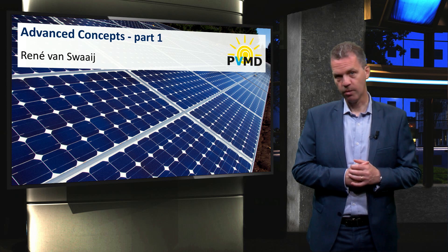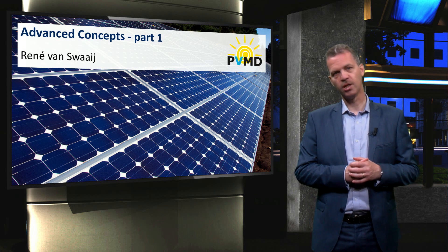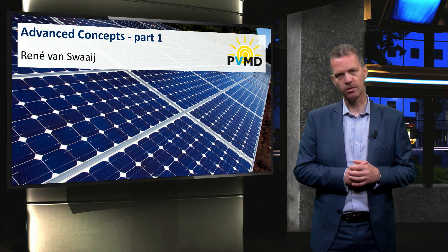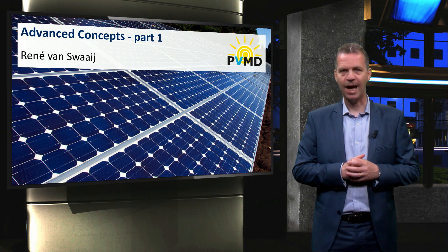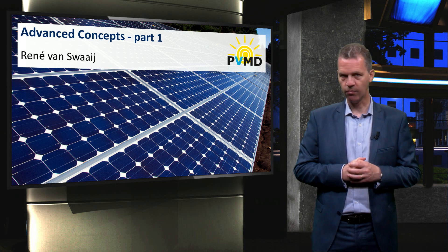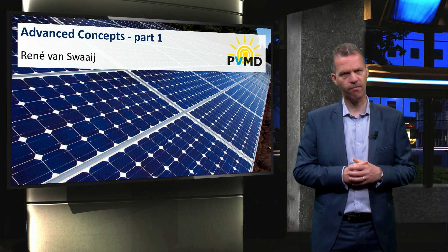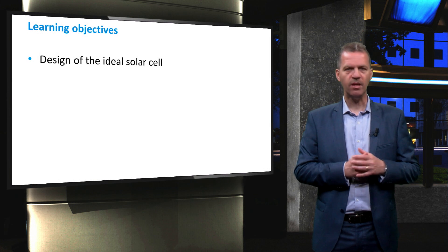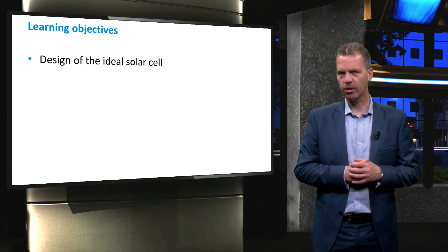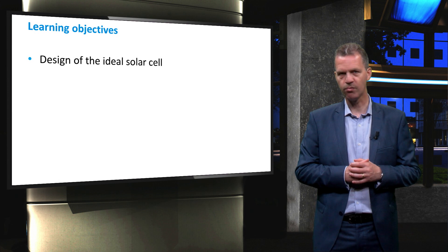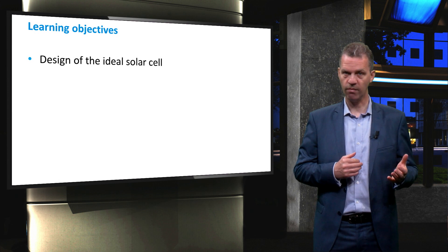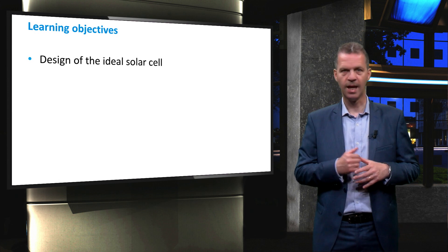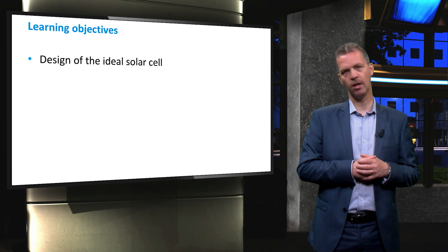Now that we have discussed the most important design considerations for a crystalline silicon solar cell, we will look at how industry and research institutes have implemented these features to produce record efficiency solar cells. In this video, we will show the ideal solar cell design based on the features mentioned in previous videos, such as surface texturing, passivation and localized doping.